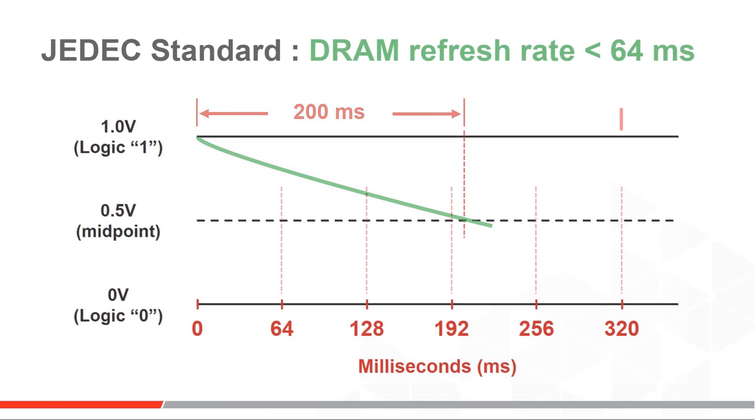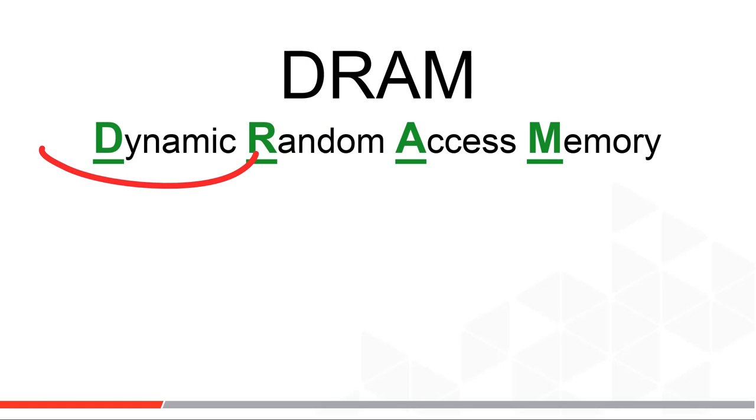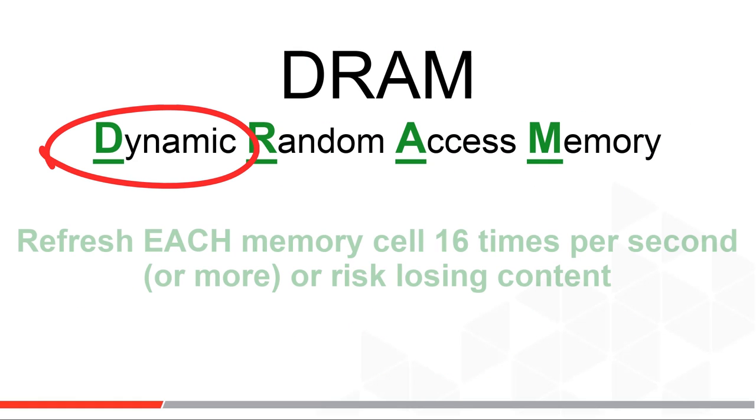The JEDEC committee standard for refreshing every DRAM capacitor on an IC is every 64 milliseconds or less. That's why this is called dynamic RAM. Dynamically refresh it 16 times at least each second or risk losing your memory content.